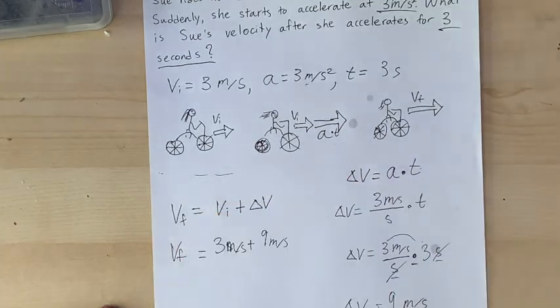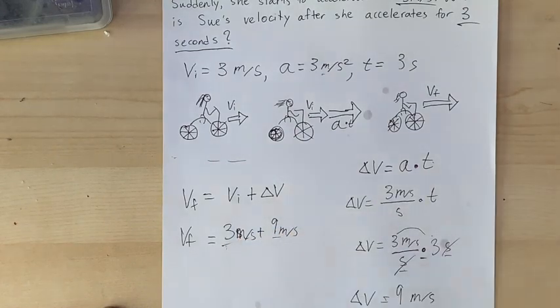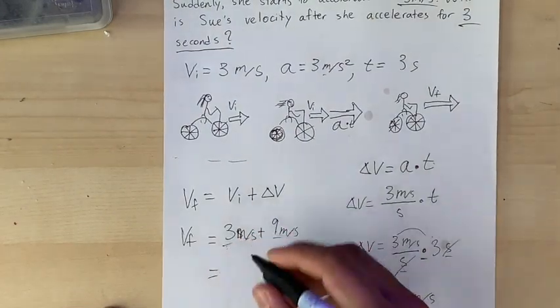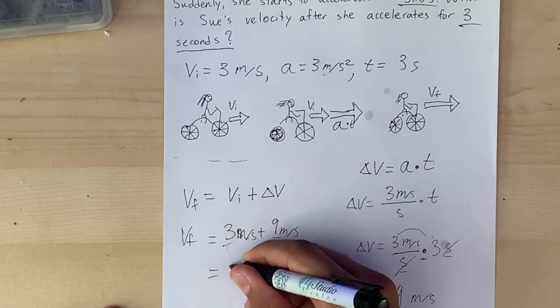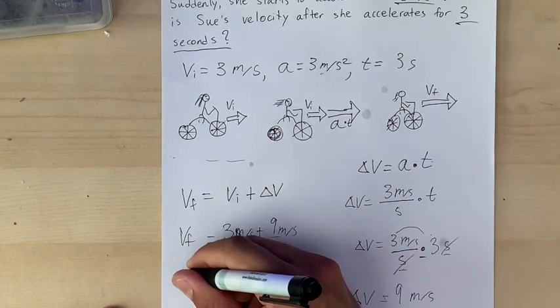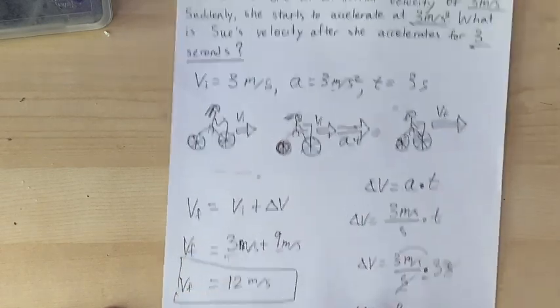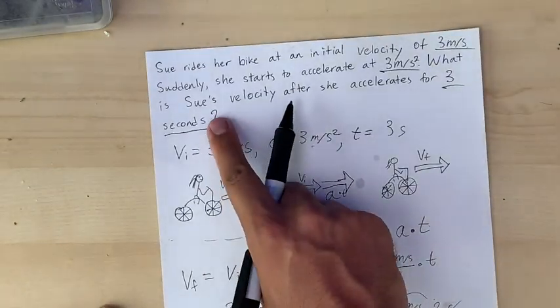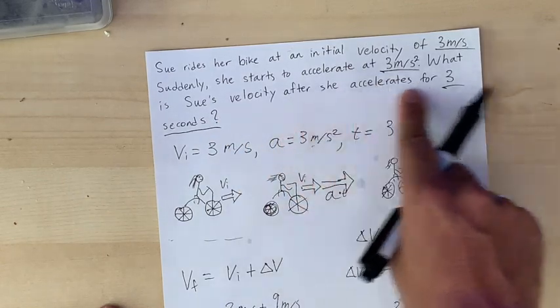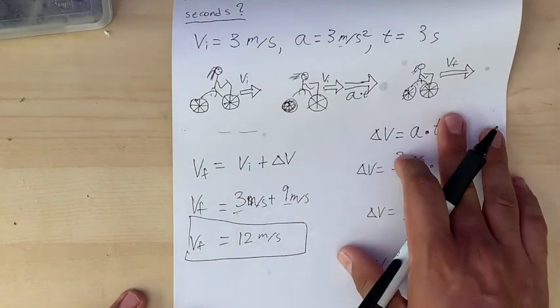And let's bring the VF. That's what we're looking for. So we can now combine these two velocities, add them together and you get twelve meters per second. VF equals twelve meters per second. So that is Sue's velocity after she accelerates, our final velocity at the end of the story.